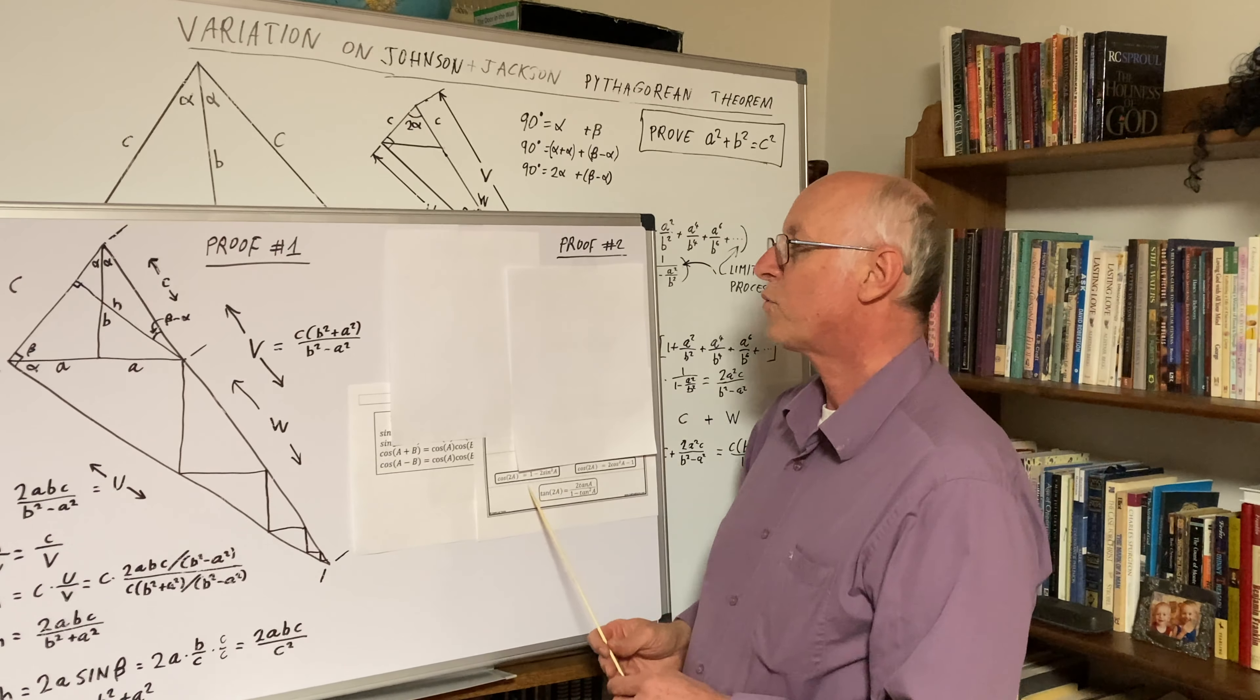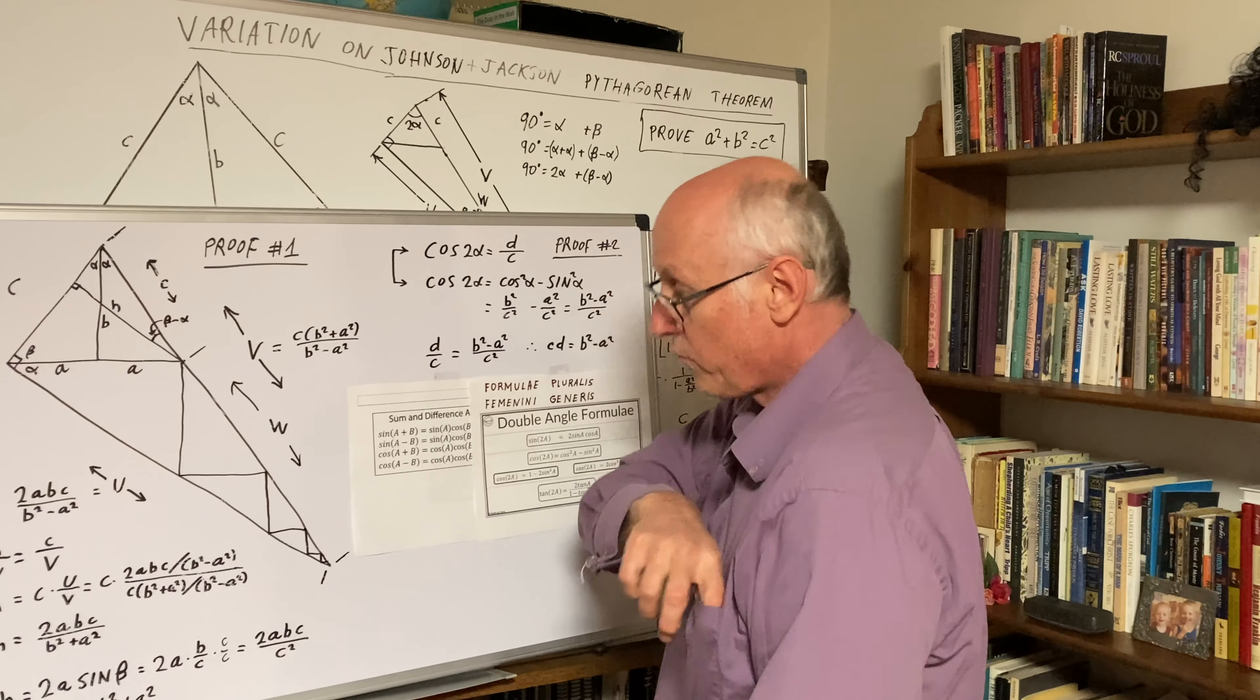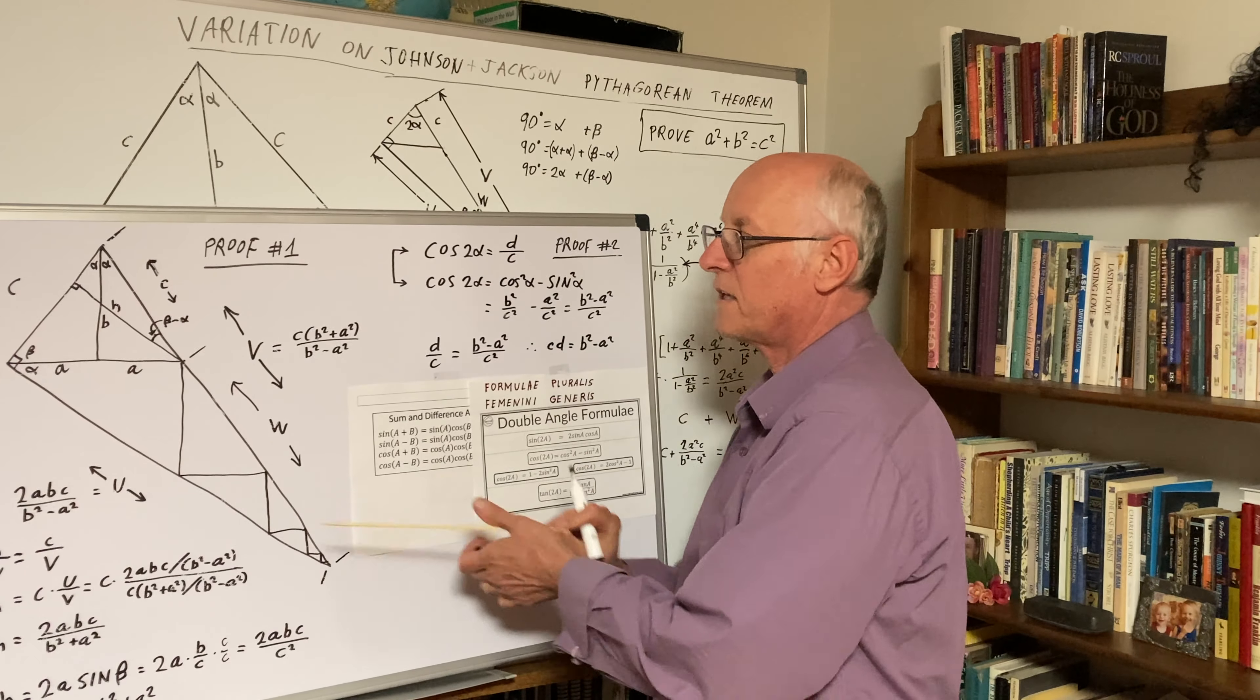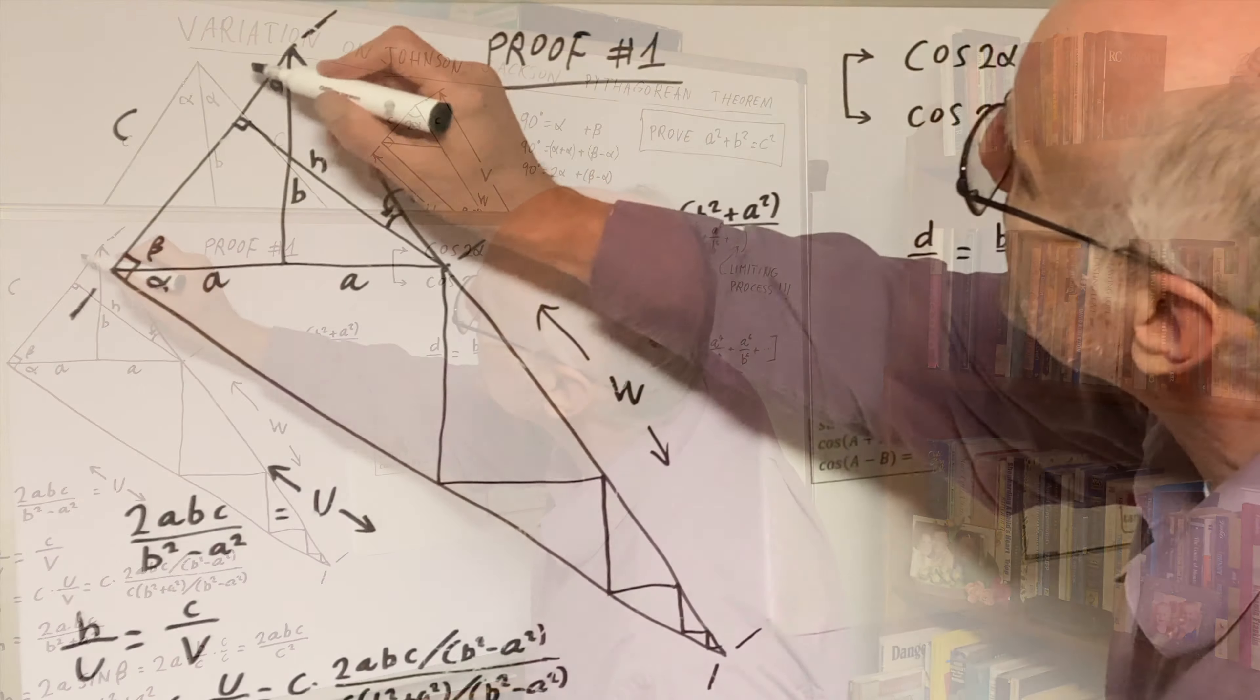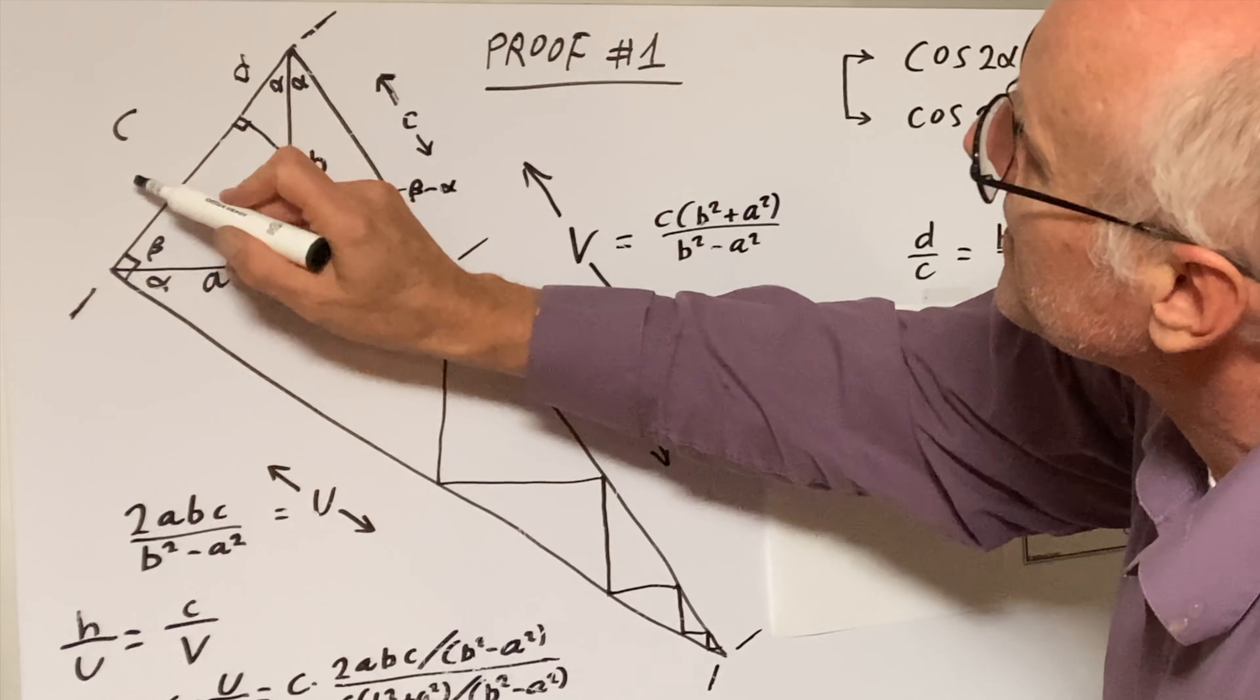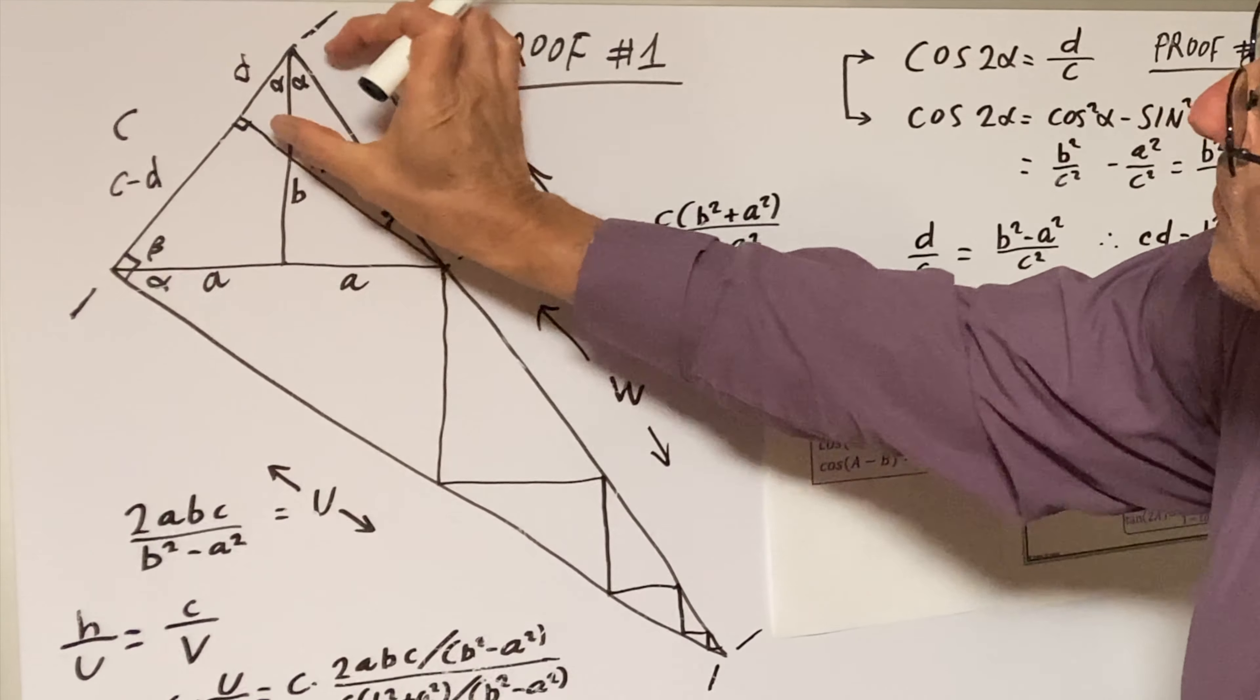In proof two, we will simplify things a little bit. Instead of using this U and V business with the infinite process, we're going to use this distance D. And this is C minus D. You see these two segments?